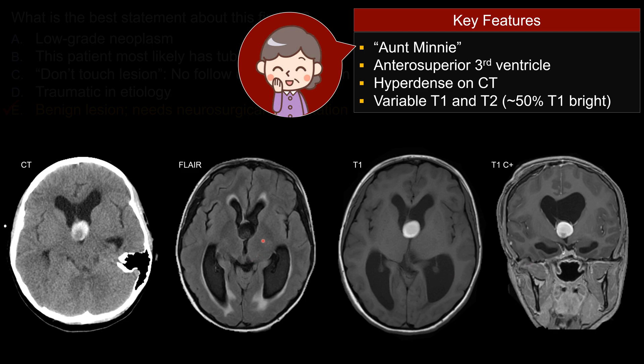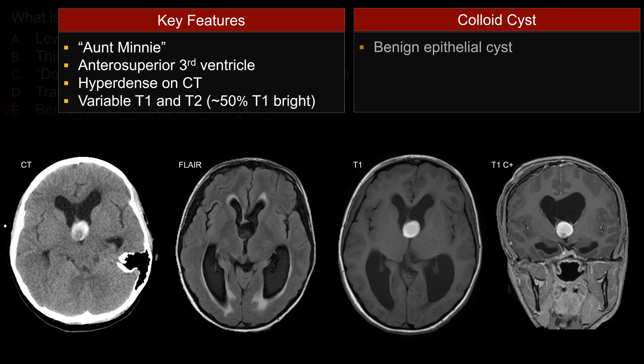On T2-weighted sequences, which I don't have the image here to show you, the signal could be variable — it could be bright on T2, isointense on T2, or sometimes hypointense on T2. So this is a classic example of a colloid cyst — again, an Aunt Minnie.